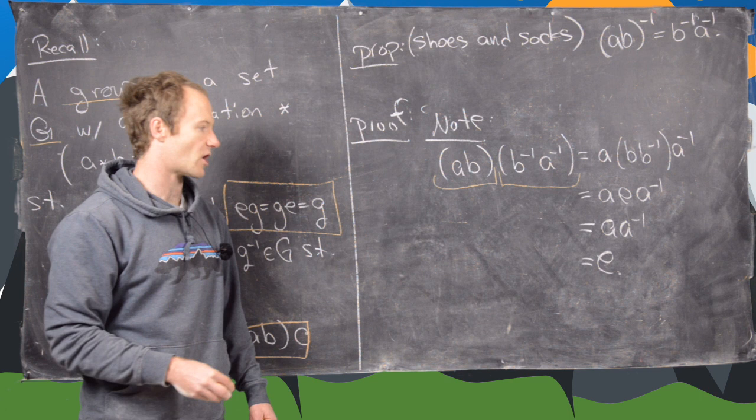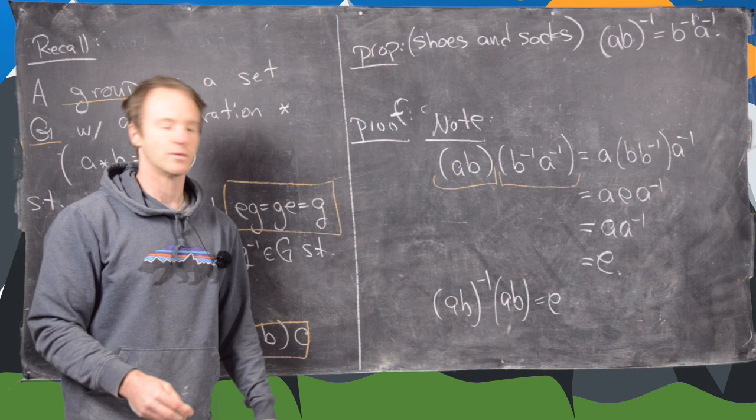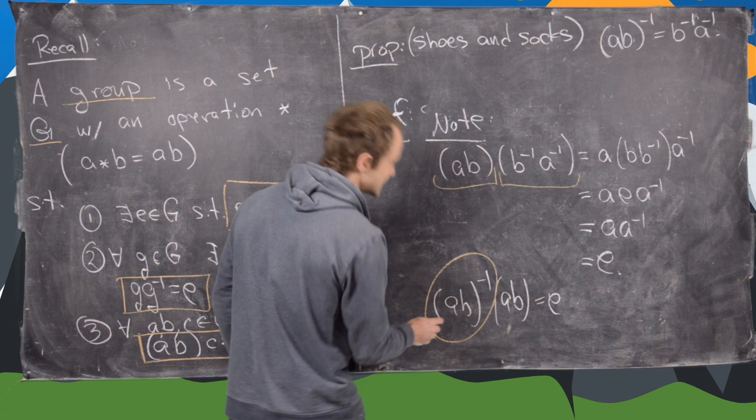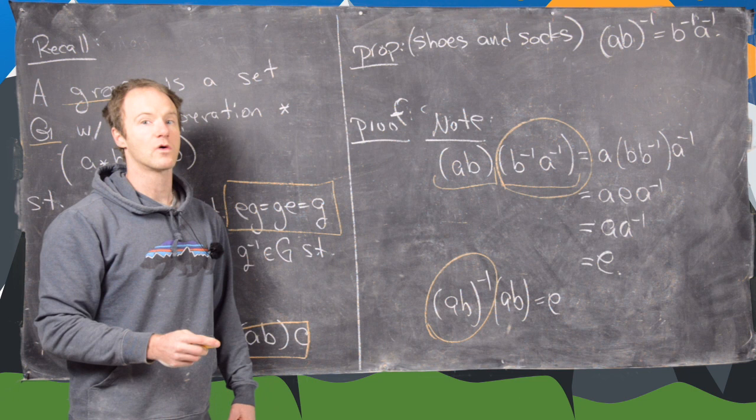So what that tells us is that this and this are inverses of each other but now since inverses are unique we have AB quantity inverse also times AB equals the identity. So we know that's true by definition but what that does is makes this thing equal to this thing again because inverses are unique by what we proved in the last proposition. We've got one more of these before the end of this video.